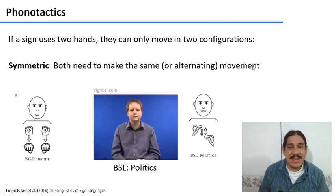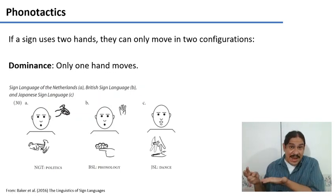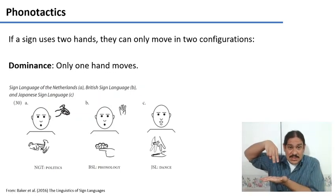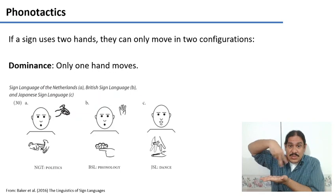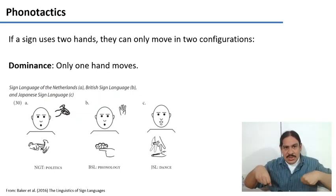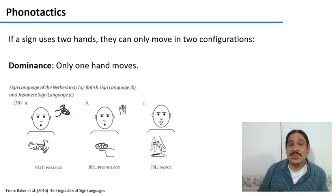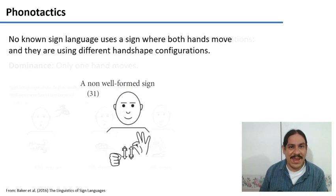You can do that, or you can have what's called dominance, where one hand is still and the other one moves. For example, in Japanese sign language, this is the word for dance. One hand is stationary, the other one is moving. So symmetrical motion or dominance. These are the only ways in which you can have signs with two hands.